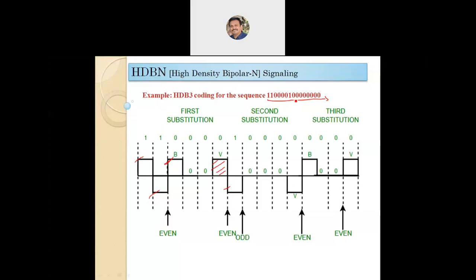The next amplitude after V is minus-A. Then we observe the next four zeros, which are replaced by 000V, because since the last substitution we observe an odd number of ones — only one bit — since the last substitute. Following the rule: odd number of ones since last substitute means we use 000V. As V violates the rule, the previous is minus-A so this V bit is also marked as minus-A.